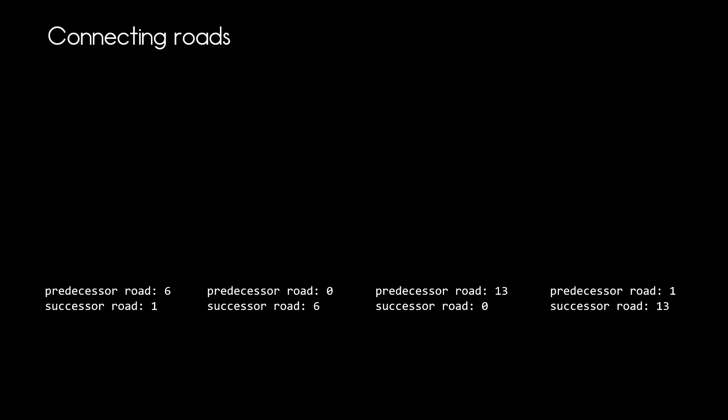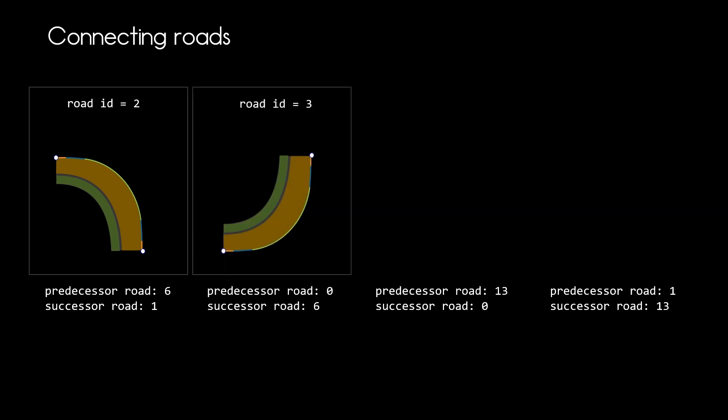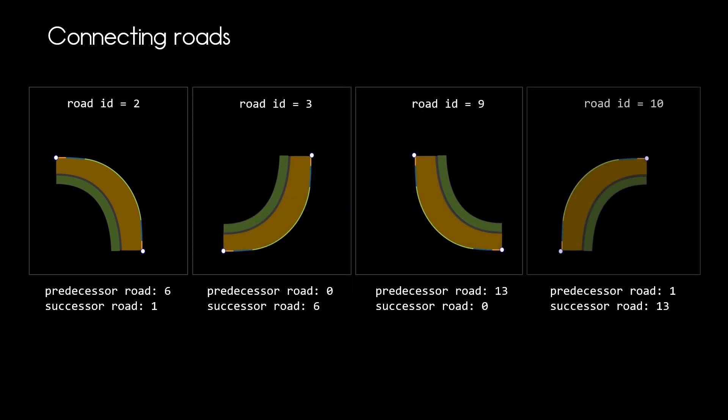This is how it works. So in our junction we have four roads like our road with ID 2. These are the roads 3, 9, 10. And they are all positioned around the junction to form our junction and add the sidewalk to the outside of the junction.